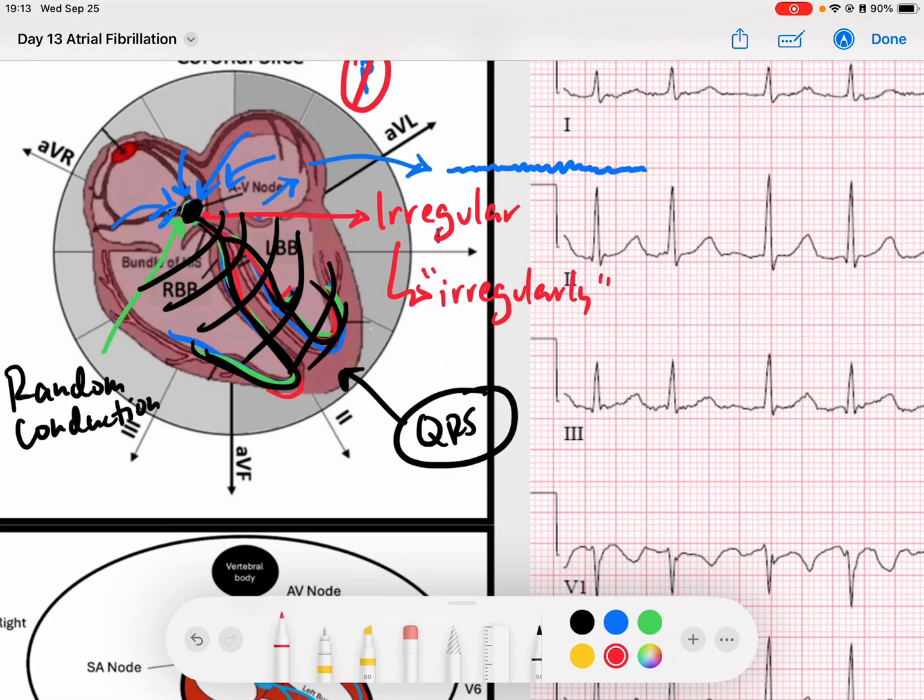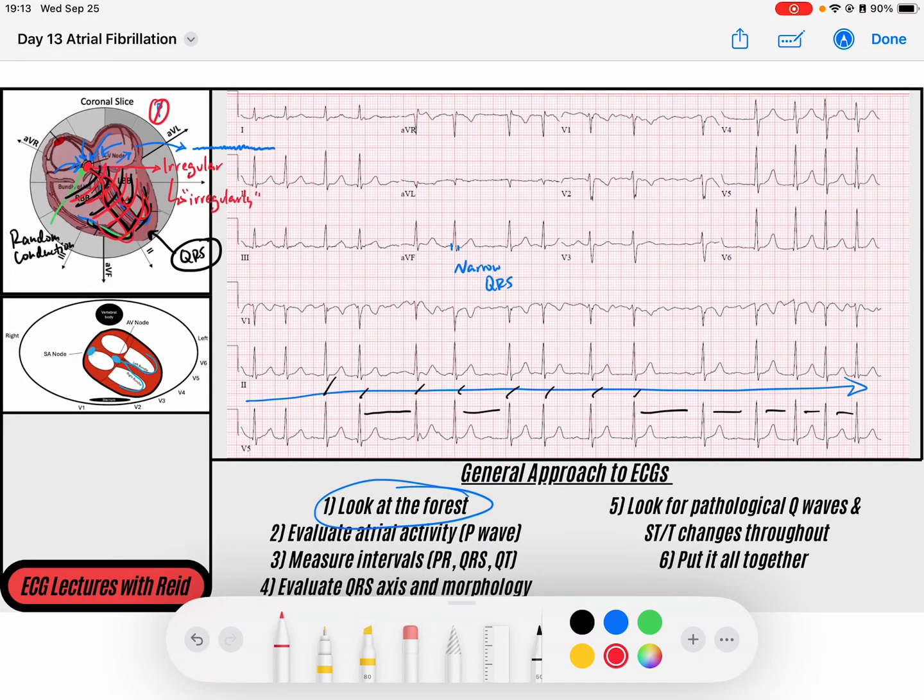I know that my QRSs are being generated from my AV node. Remember that the AV node, when the AV node sends signal down to the ventricles, it does so via this His-Purkinje fibers that sends rapid signal through the ventricles. A narrow QRS means that the rhythm is being generated at least at the level of the AV node or higher.